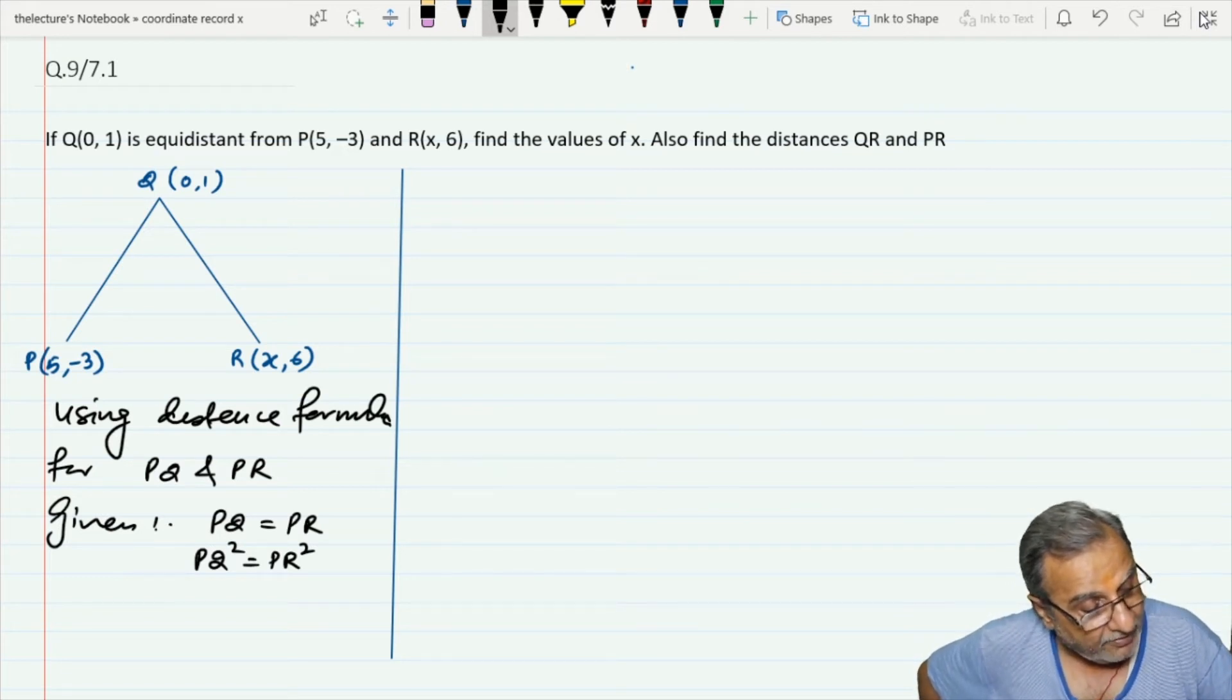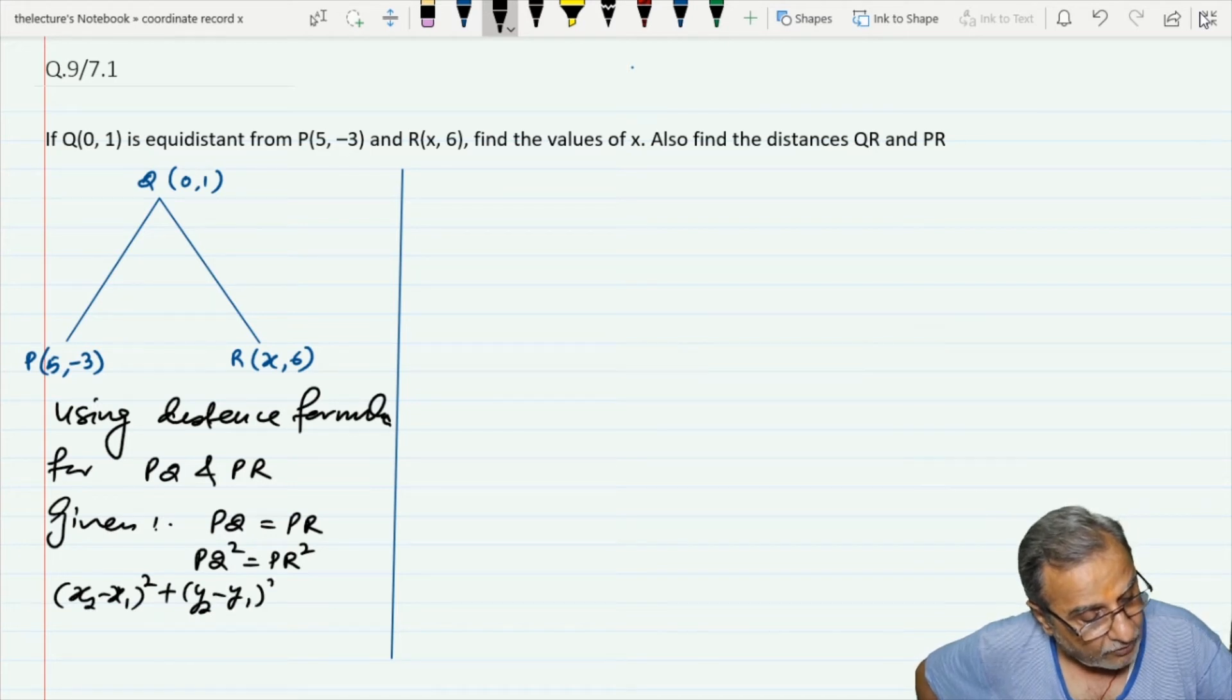The distance formula after squaring is: (x₂ - x₁)² + (y₂ - y₁)².